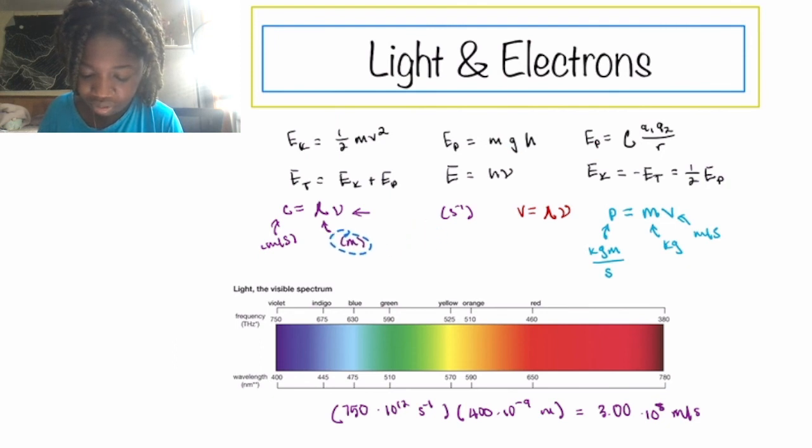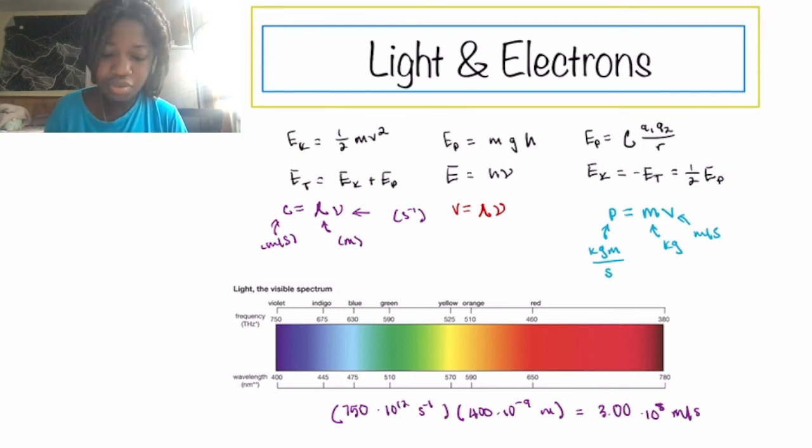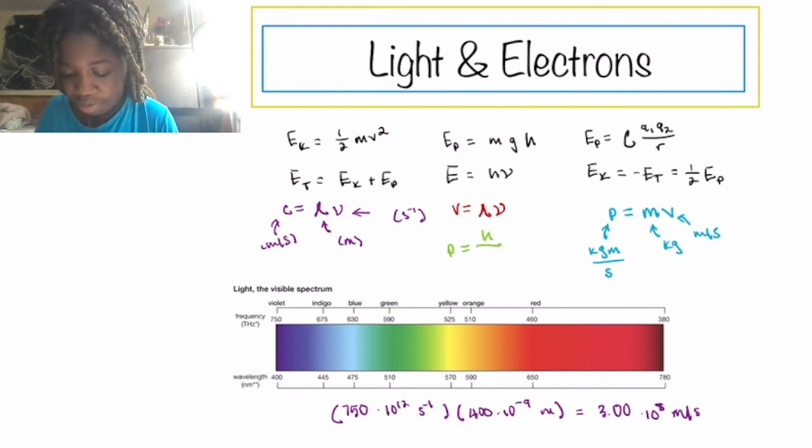We have that momentum equals h, Planck's constant, divided by the wavelength. And this specific wavelength is known as the de Broglie wavelength.